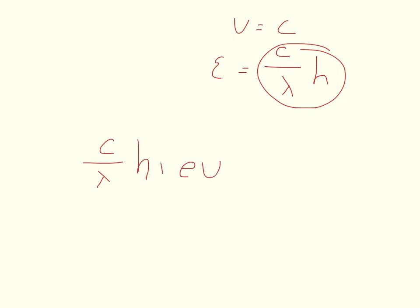And then we can plug this equation into our conversion factor for electron volts, so C over lambda times H, this is going to give us units of joules, times 1 electron volt divided by 1.6 times 10 to the negative 19th joules equals my energy in electron volts.